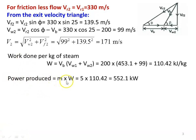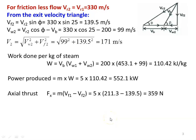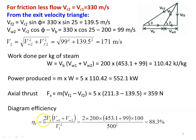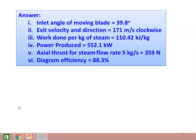Work done per kg of steam equals VB into (VW1 plus VW2), which is 200 into (453.1 plus 99), equal to 110.42 kilojoules per kg. Power produced equals M into W, which is 5 into 110.42, equal to 552.1 kilowatts. Axial thrust Fx equals M into (VF1 minus VF2), equal to 5 into (211.3 minus 139.5), equal to 359 Newton. Diagram efficiency eta_B equals 2 VB(VW1 + VW2) divided by V1², equal to 88.3 percent.